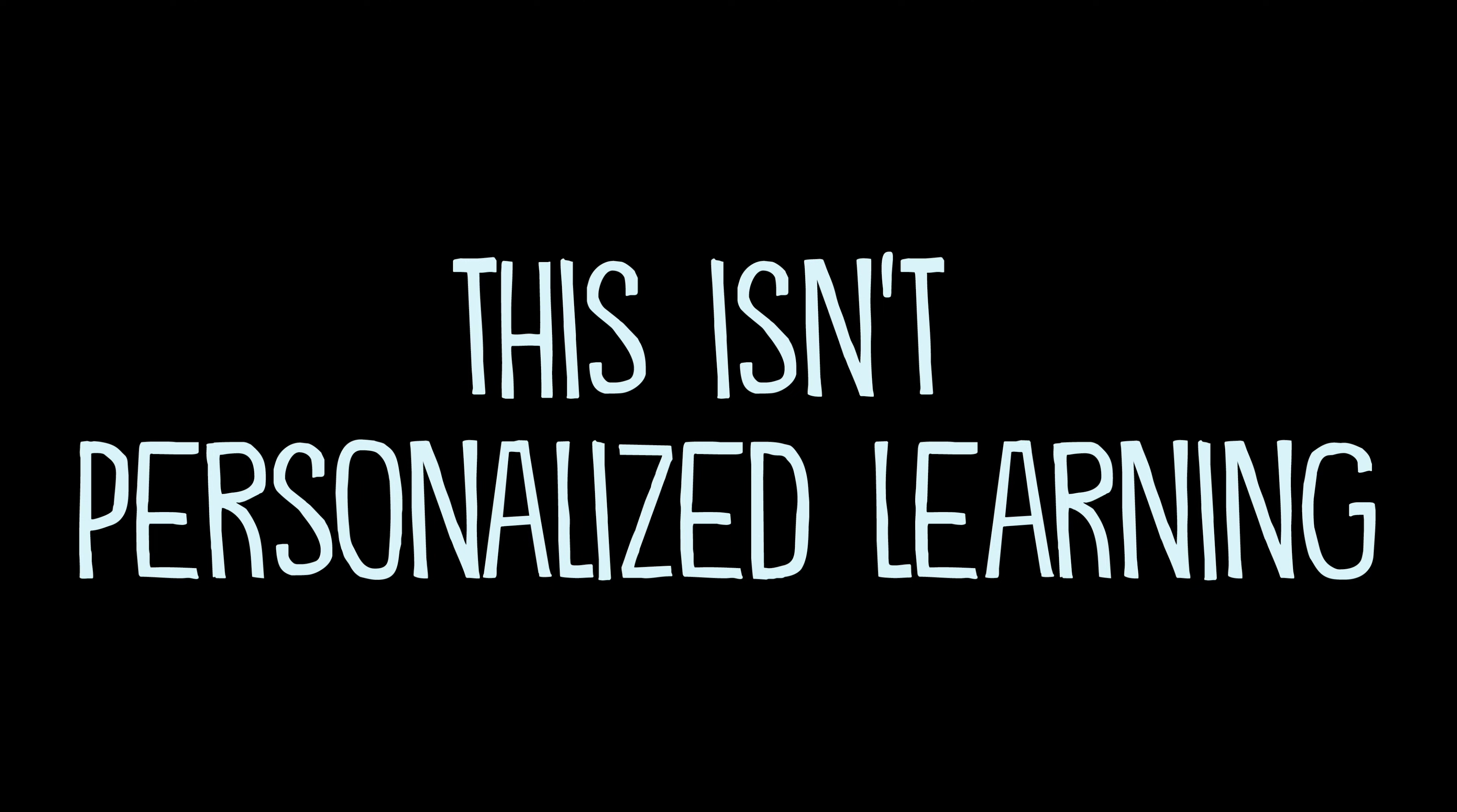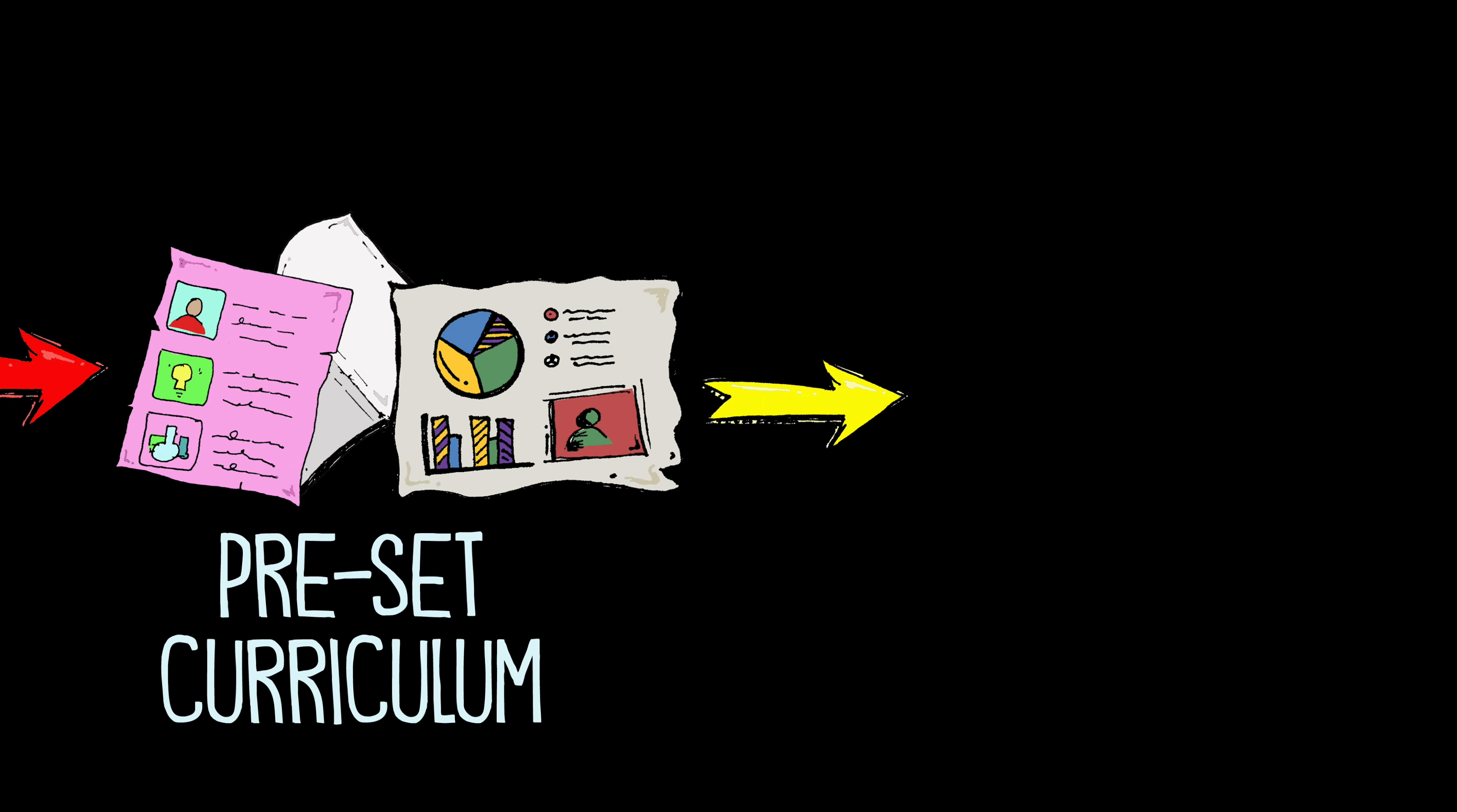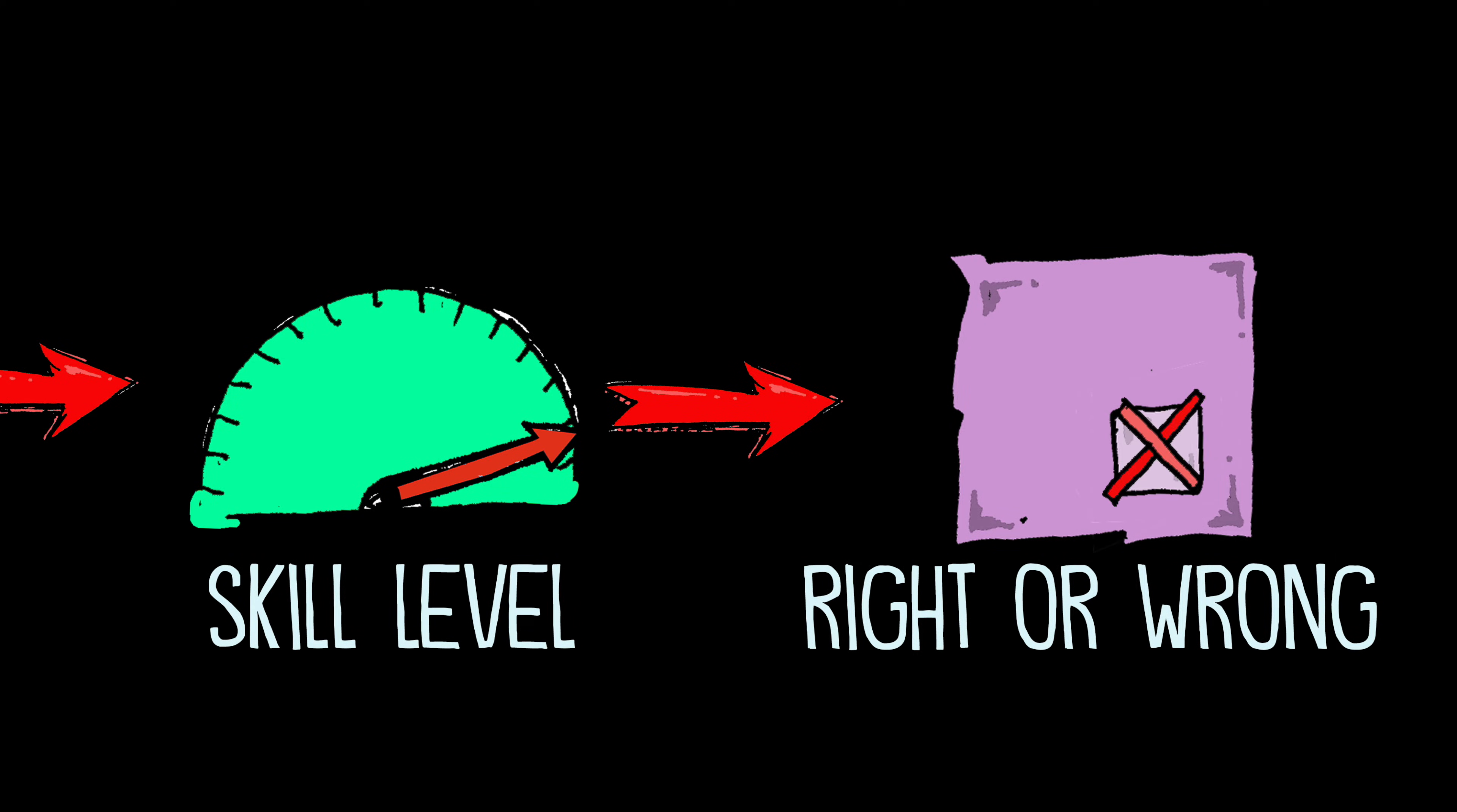But this isn't actually personalized learning. This is adaptive learning. Here's the difference. Adaptive learning is algorithm driven. Students progress through preset curriculum and the AI makes adjustments to the skill levels of the students as they get answers correct or incorrect.